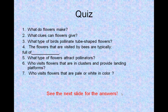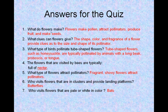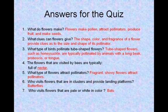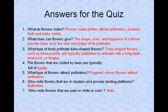Let's see the next slide for the answers. Number 1: What do flowers make? Flowers make pollen, attract pollinators, produce fruit, and make seeds. Number 2: What clues can flowers give? The shape, color, and fragrance of a flower provide clues as to the size and shape of its pollinator. Number 3: Tube-shaped flowers, such as honeysuckle, are typically pollinated by animals with a long beak, proboscis, or tongue. Number 4: The flowers that are visited by bees are typically full of nectar. Number 5: What type of flowers attract pollinators? Fragrant, showy flowers attract pollinators. Number 6: Who visits flowers that are in clusters and provide landing platforms? Butterflies. Number 7: Who visits flowers that are pale or white in color? That would be bats.